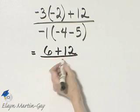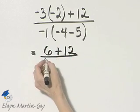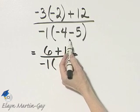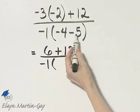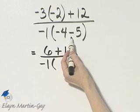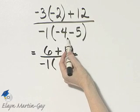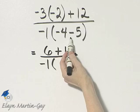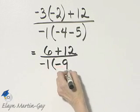At the same time, let's start working in the denominator. I have negative 1, and then let's simplify within this set of parentheses. That's negative 4 minus 5. If you need to, go off to the side and write this as negative 4 plus negative 5. The result will be negative 9.